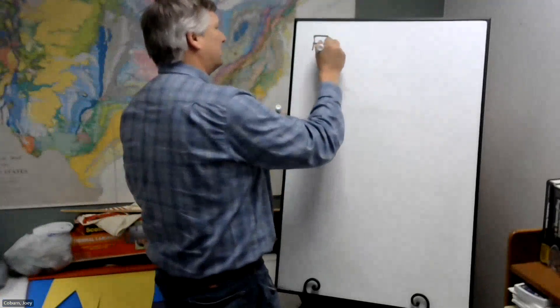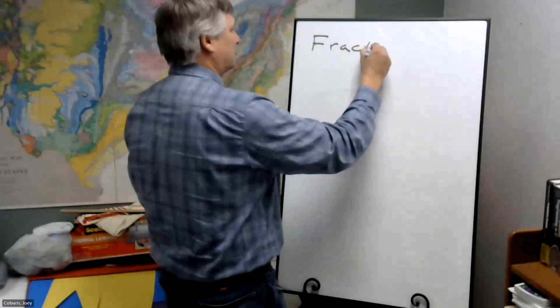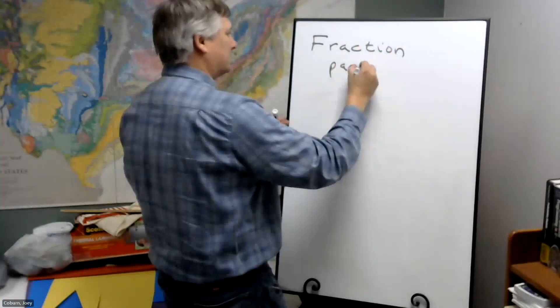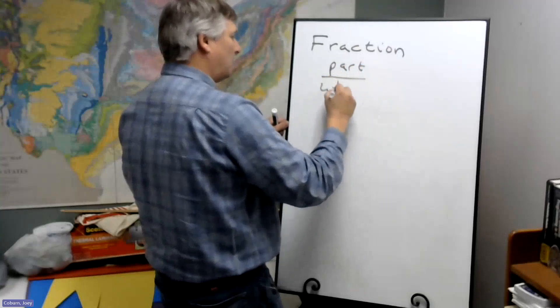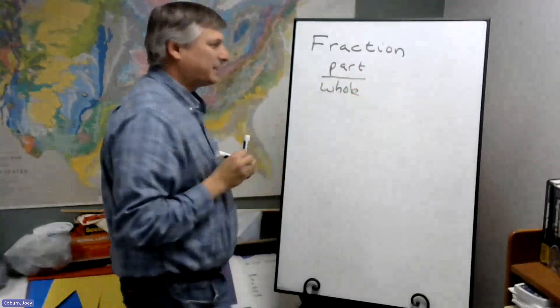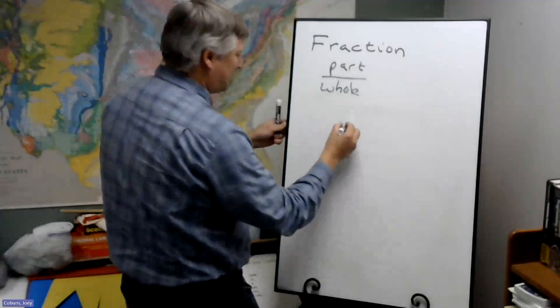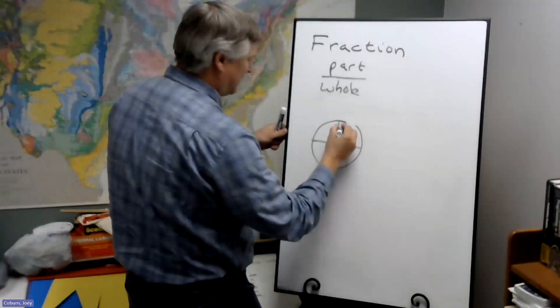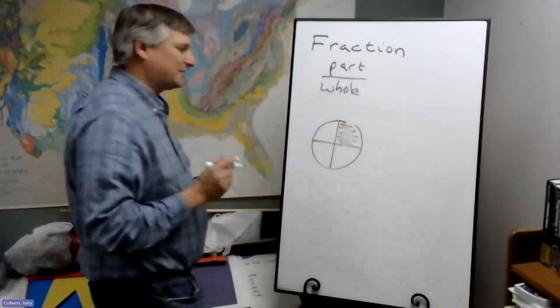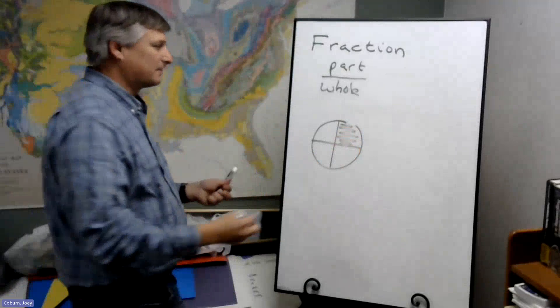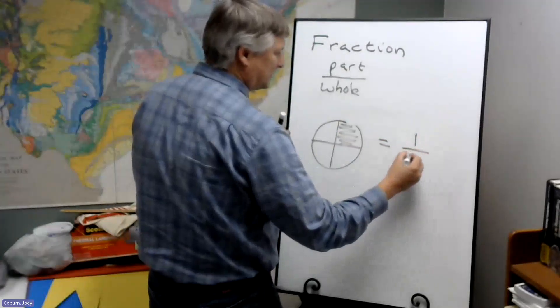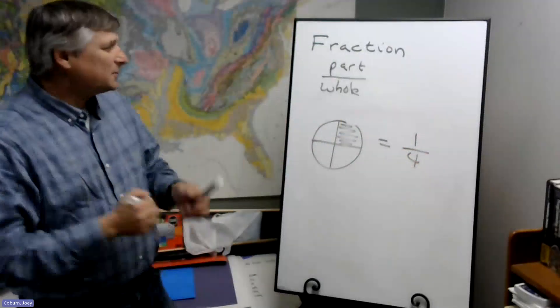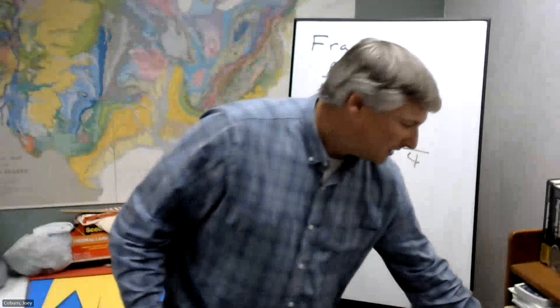So a fraction, this is a part over a whole. So like if we're talking about pizzas, say we have a pizza and all the other slices have been eaten except one, we have part of the pizza, one slice out of the whole of four. So this is what a fraction is.